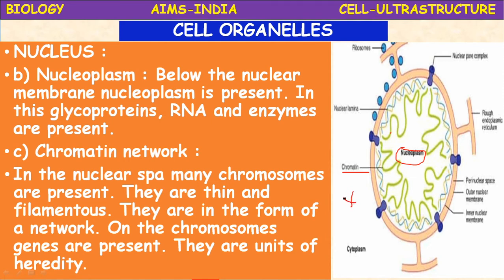This chromatin network consists of thread-like structures. During cell division, this chromatin network breaks into chromosomes. On each chromosome, hundreds of small units called genes are present. Genes are the vehicles of heredity — they carry characteristics from parents to offspring.